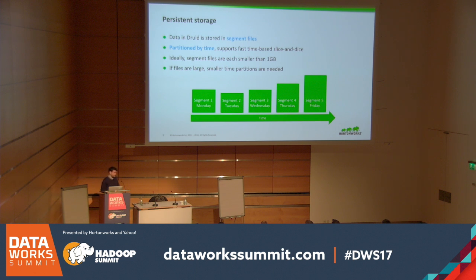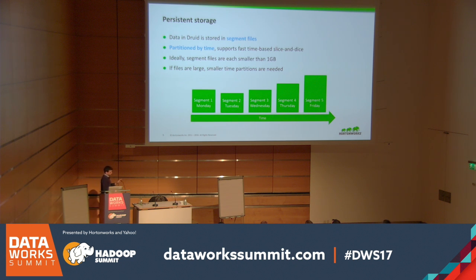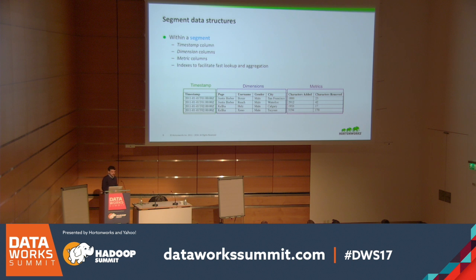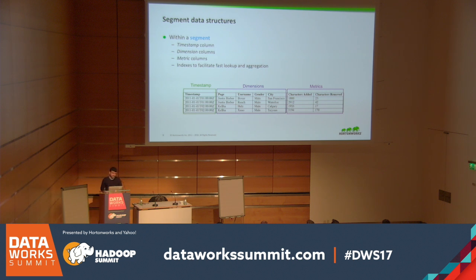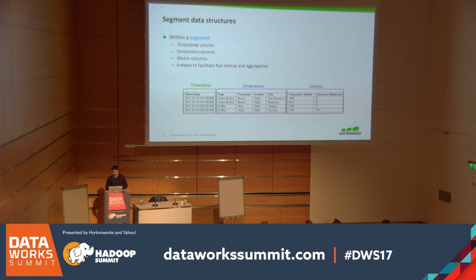You can also use what they call shards — multiple segments for the same time dimension value. Within a segment, Druid separates columns into three types: the timestamp (which is mandatory), dimensions (the columns on which you want to filter or group by), and metrics (the columns on which you want to compute aggregations). Druid automatically generates indexes to facilitate fast lookup and aggregation.